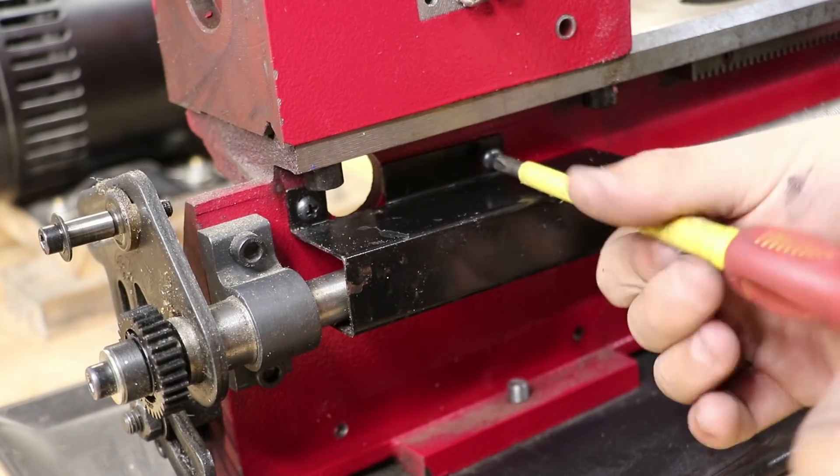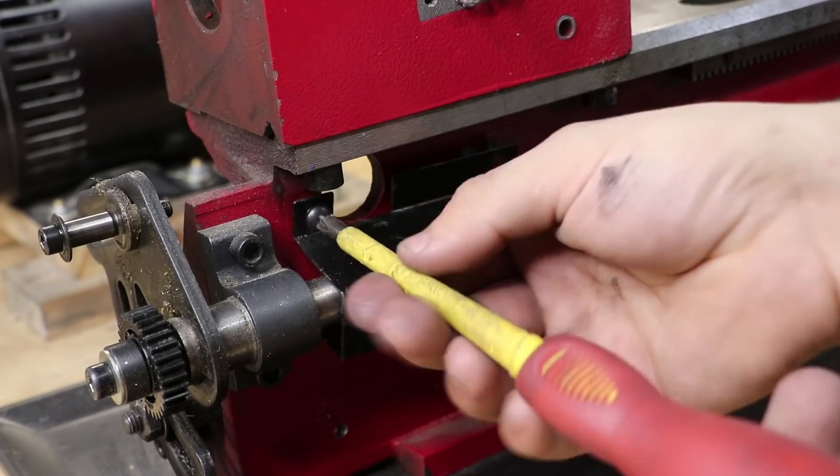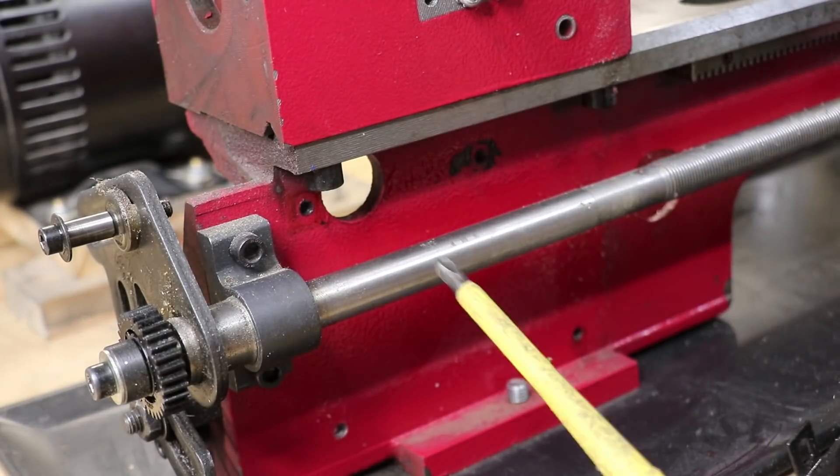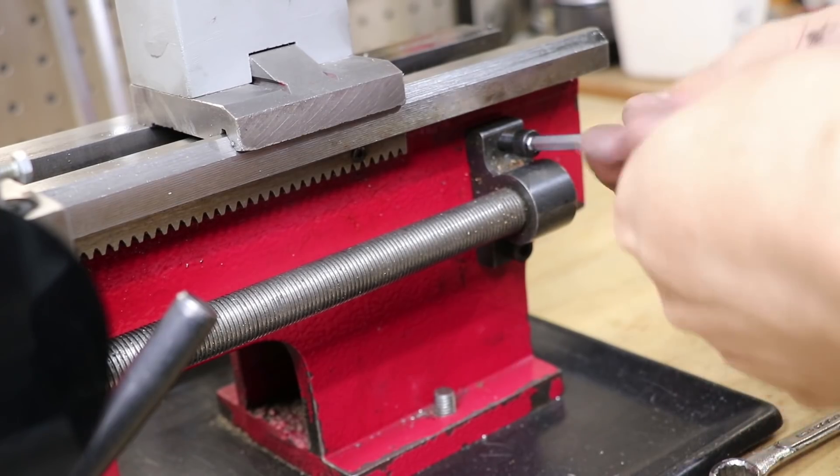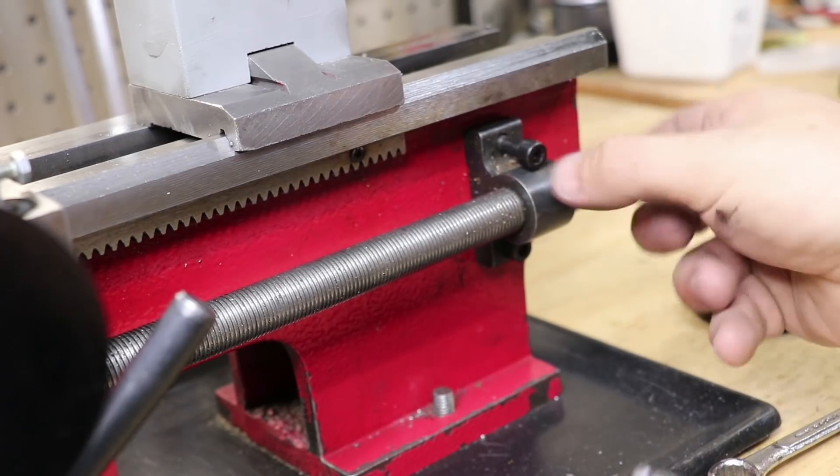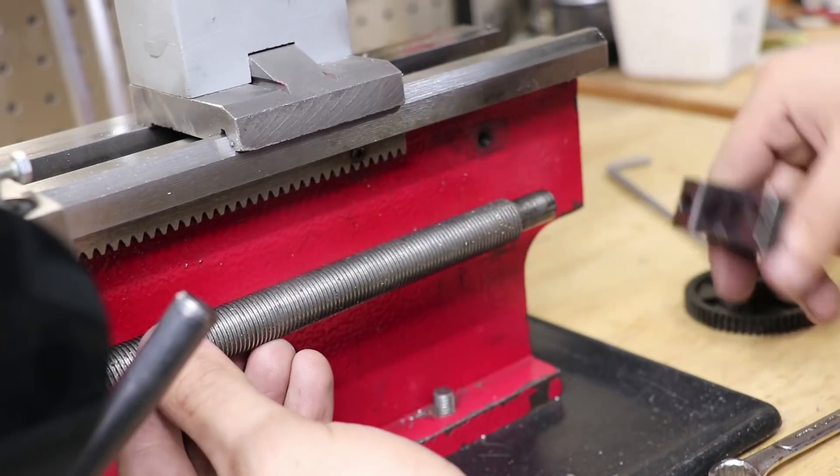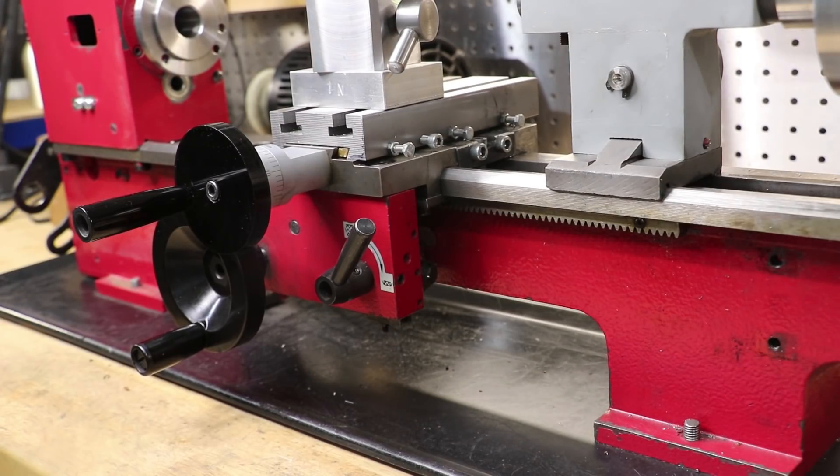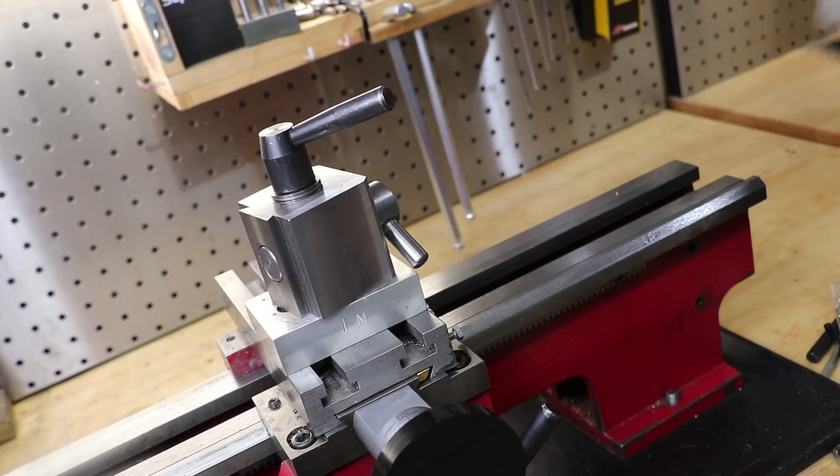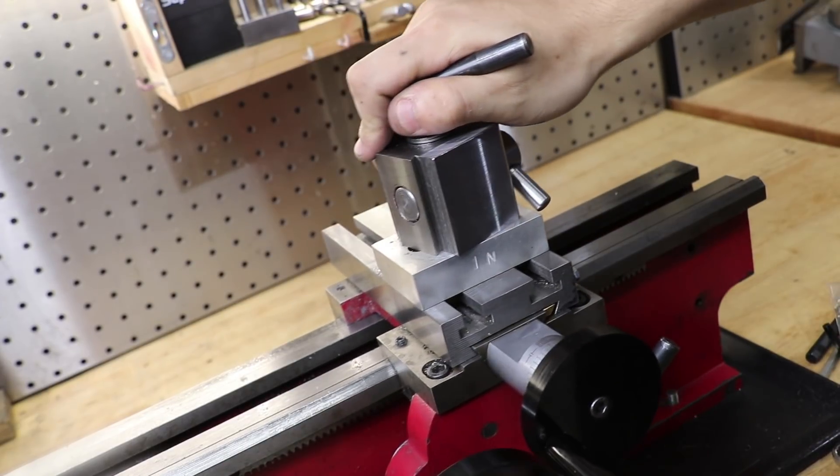To remove the carriage, I'll have to remove the lead screw. And like that, the tailstock and carriage are easily slid off.